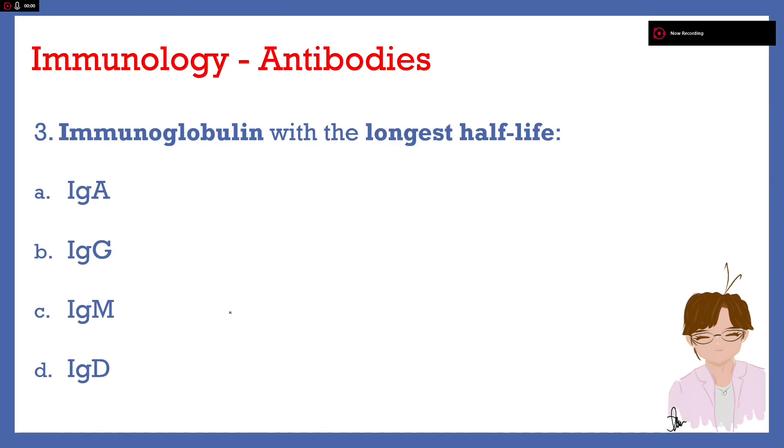Number 3. Immunoglobulin with the longest half-life. Letter A, IgA, letter B, IgG, letter C, IgM or letter D, IgD. Answer here is letter B, IgG. Did you notice that we just answered IgG consecutively? Three in a row. Oh well. Let's explain this part.